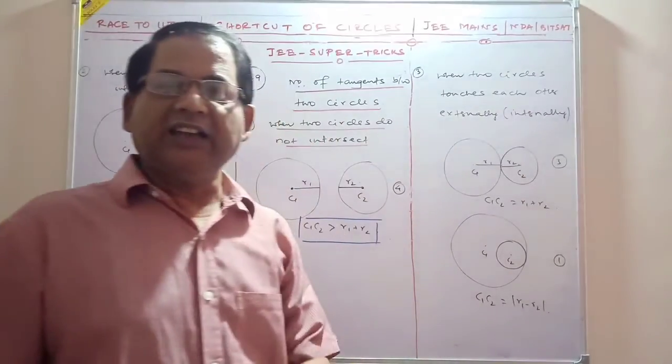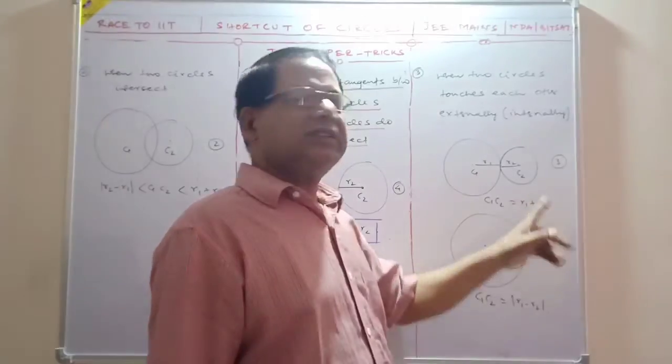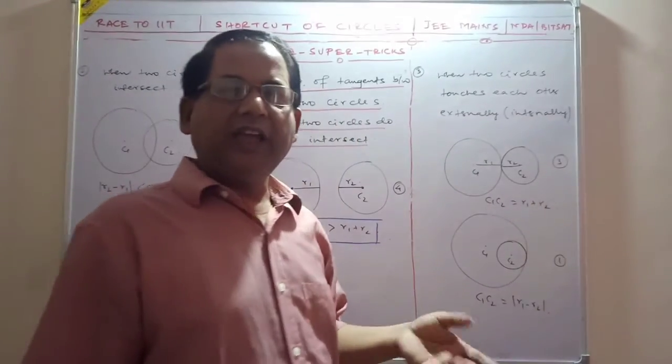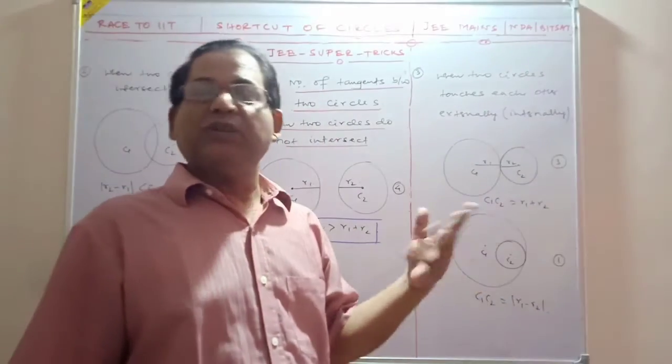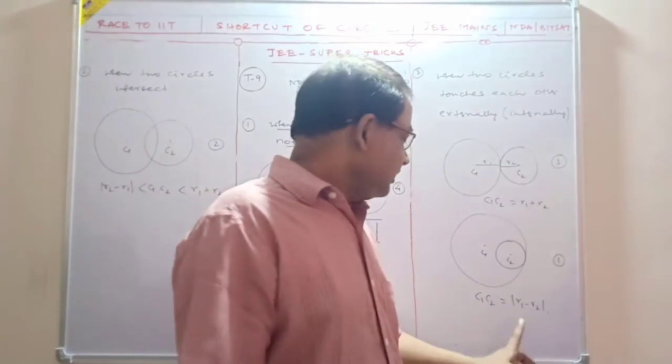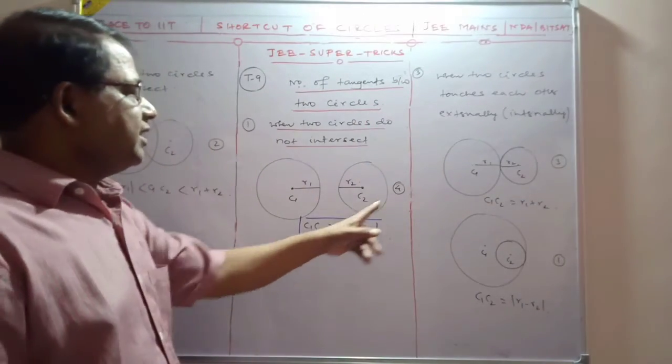When two circles touch each other, either externally or internally. This is when C1C2 equals R1 plus R2, or C1C2 equals R2 minus R1.